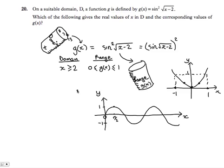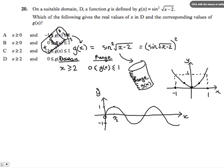So if we have a look at the choices - there they are. I have covered them up a wee bit here, but if we look at choice D: x is greater than or equal to 2, and 0 is less than or equal to g(x) is less than or equal to 1. So it is choice D. Thank you.